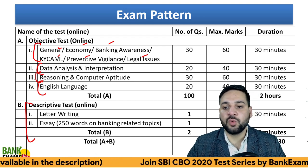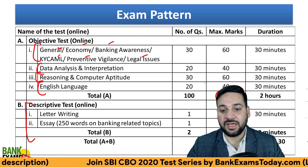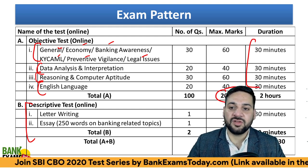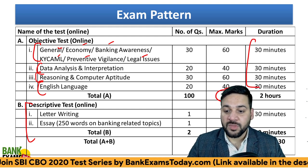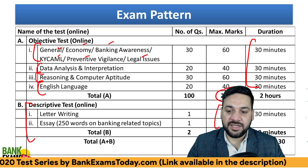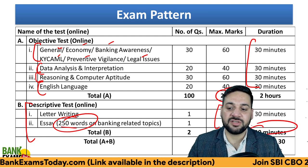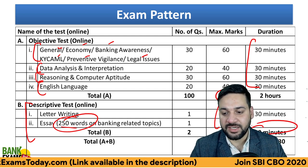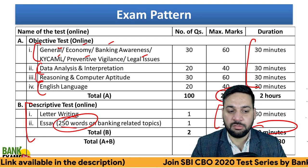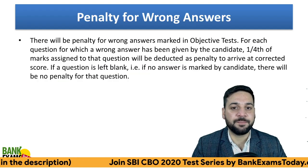There are 200 marks in total; each question carries two marks. Sectional timing is there. For the descriptive paper, letter writing and essay writing are included — a 250-word essay — and 30 minutes are allotted for the essay writing. Total two hours and 30 minutes are allotted for the online exam.